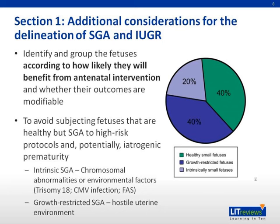The darker 40% shown in the diagram represents growth-restricted SGA fetuses. We've identified these as possibly benefiting from intervention. Therefore, we are no longer concerned about whether FAS should be classified as SGA or IUGR — we are simply sure that it is not likely to benefit from intervention and we will not intervene.